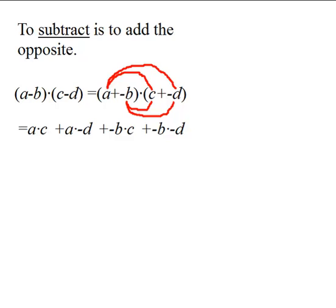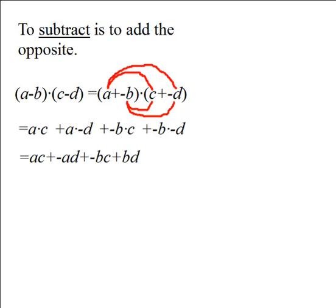Alright, the next step is to multiply each term to get ac plus negative ad plus negative bc plus bd. And then as a final step, rewrite it so that instead of adding the opposites, you are subtracting again. ac minus ad minus bc plus bd.